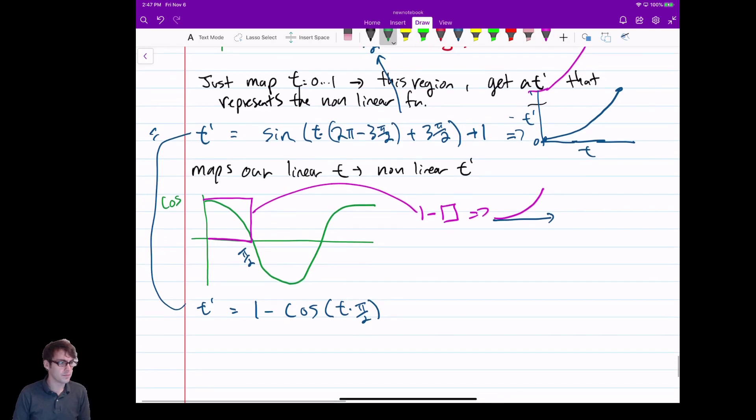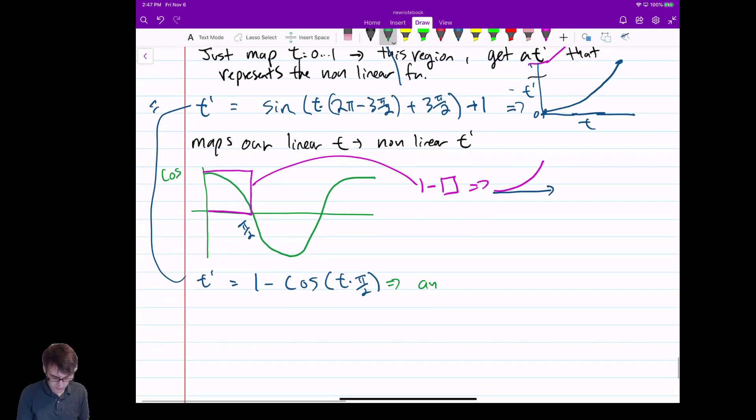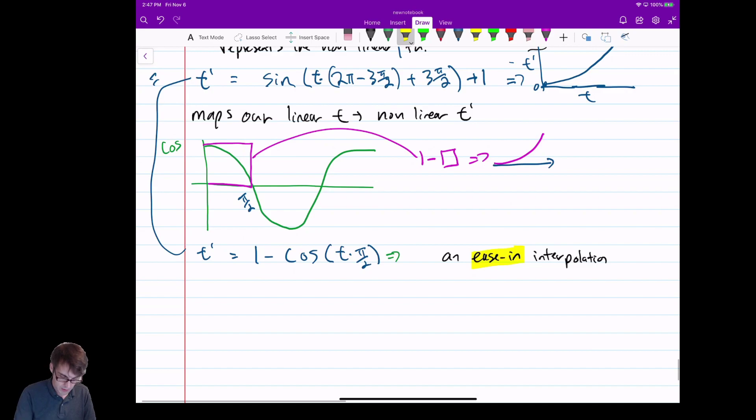Now this is called, I just want to be in black, an ease in. This is called an ease in. An ease in interpolation. And the reason for that is it slowly speeds up. It accelerates. It doesn't just start. It eases into the motion, and that's it. And then it keeps going. Okay? It doesn't ease out. It just eases in. This is our ease in interpolation. And just to drive the point home.